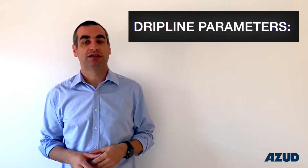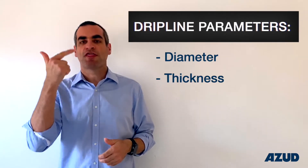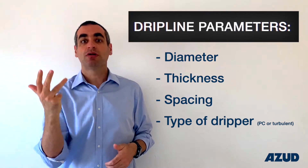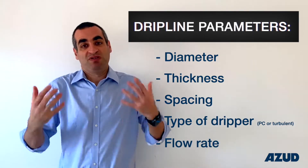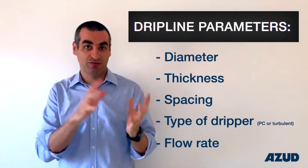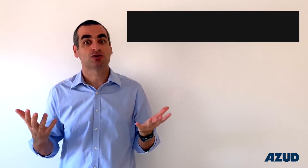This video is specially focused on drip lines. In the future I will touch other components of a complete irrigation system. There are 5 main parameters that determine a drip line: diameter, thickness, spacing, type of dripper, and flow rate. In previous videos I already explained the differences between PC and turbulent drippers and also the importance of wall thickness in a drip line.